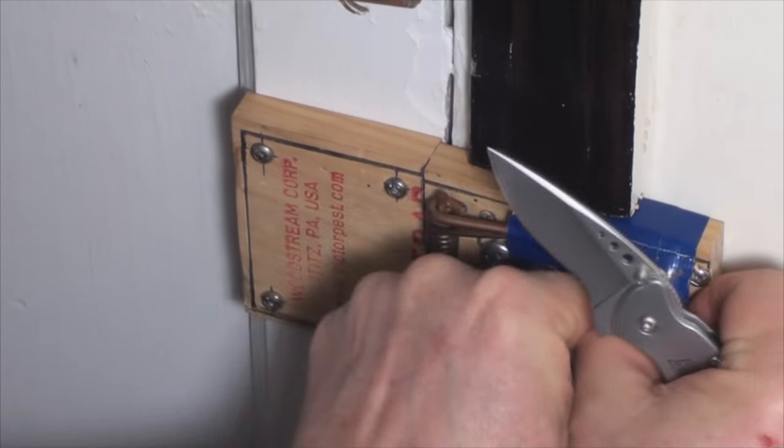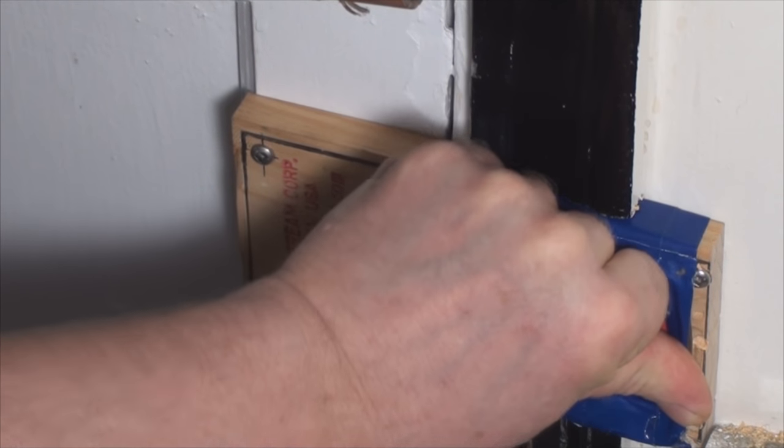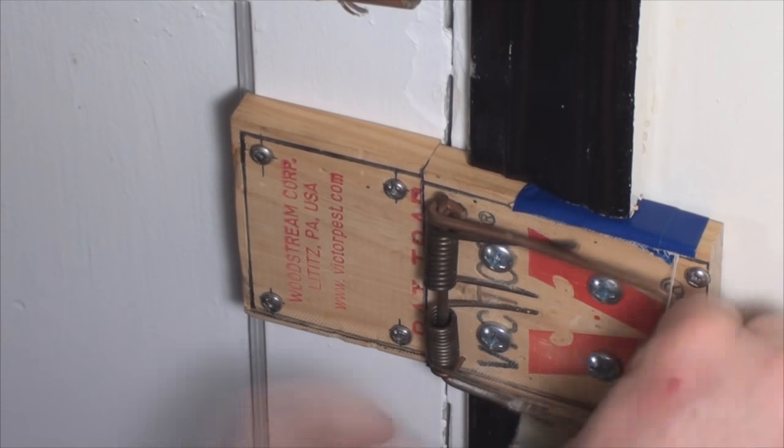So, after that, all I had to do was cut away the tape that was holding down the spring, and my rat trap automatic door closer is in action. And it works terrific.